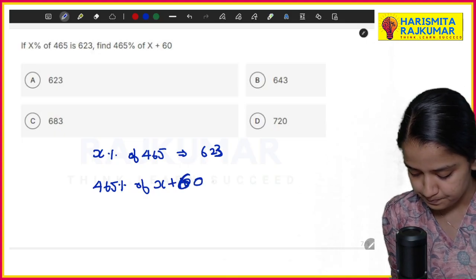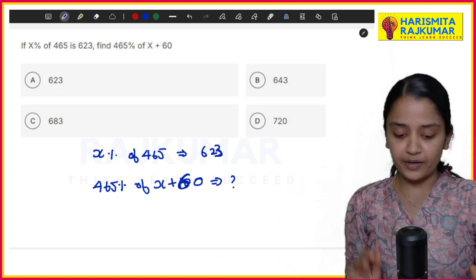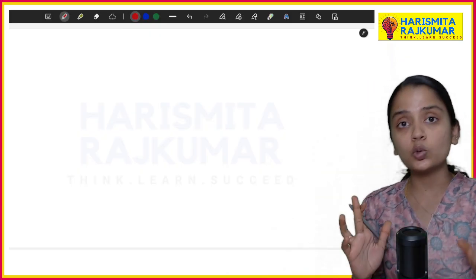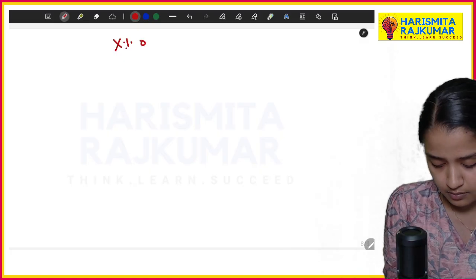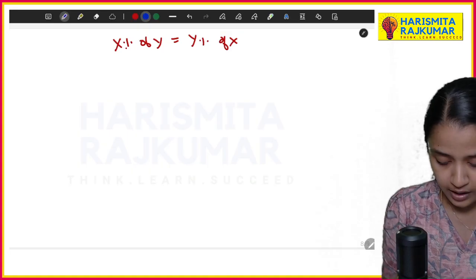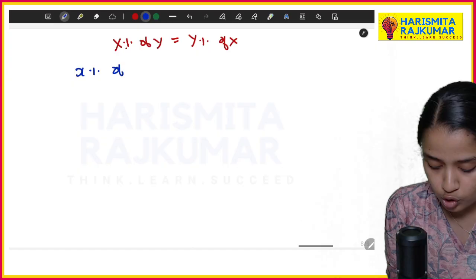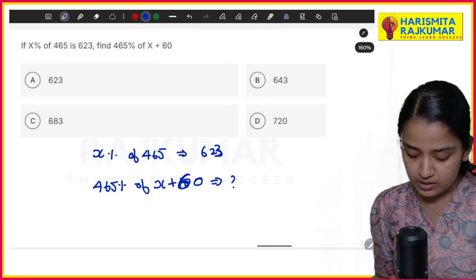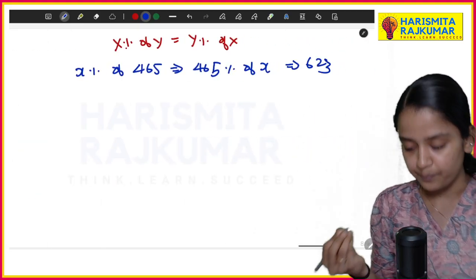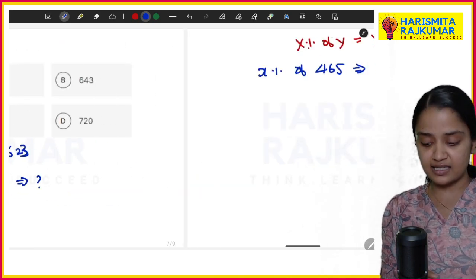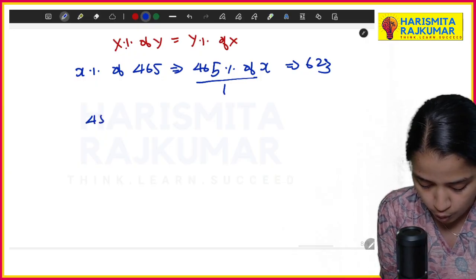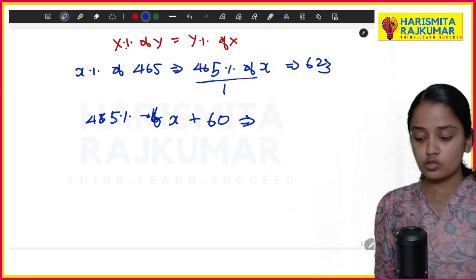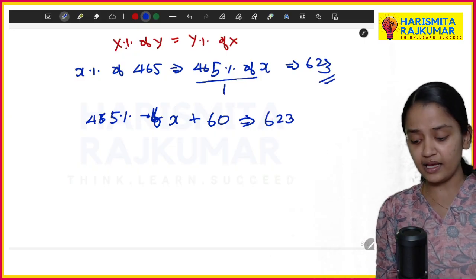For this you have to use the property. For understanding more clearly about properties, go check my part 2 video of introduction. Property says x% of y is equal to y% of x. So we know that x% of 465 is equal to 465% of x. So 465% of x will be equal to 623.